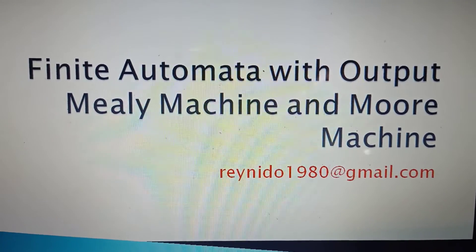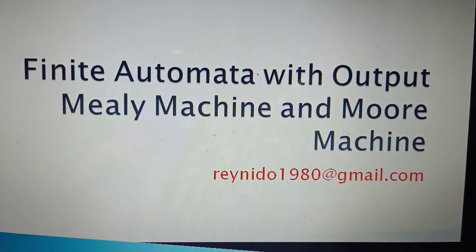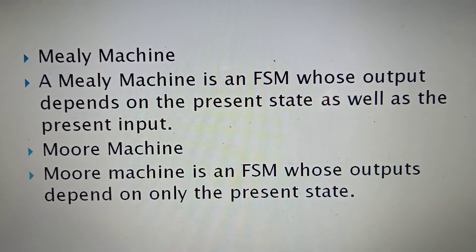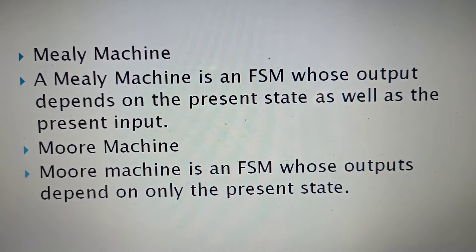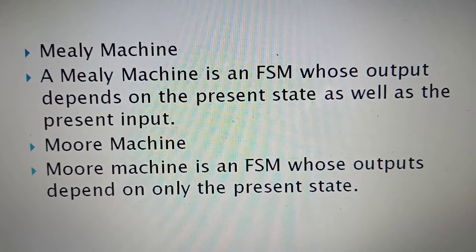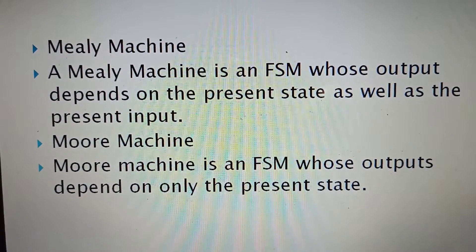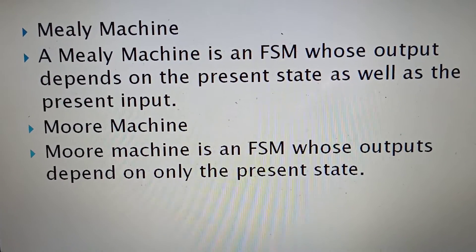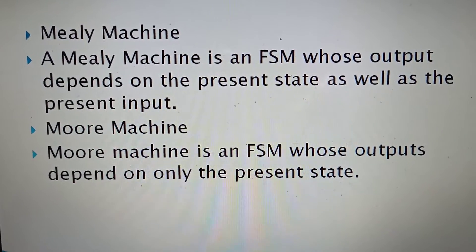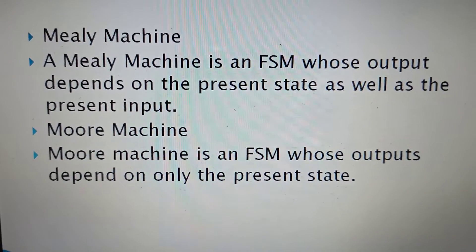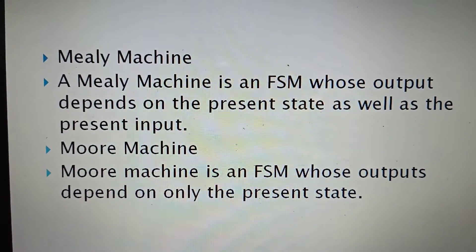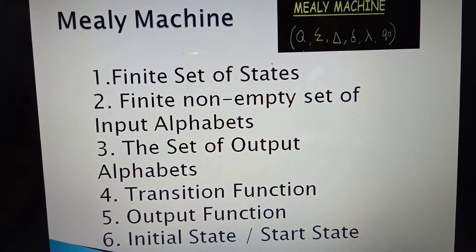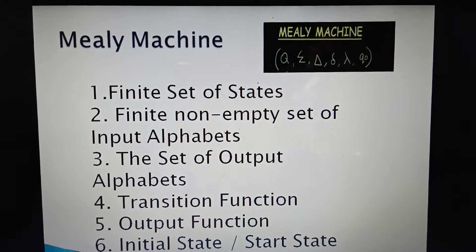So what is the meaning of the Mealy machine and Moore machine, also known as finite automata with output? A Mealy machine is a finite state machine whose output depends on the present state as well as the present input, while a Moore machine is a finite state machine whose output depends only on the present state.